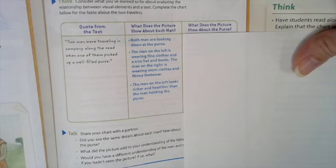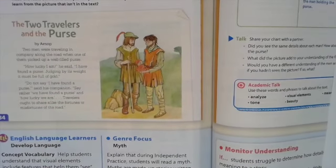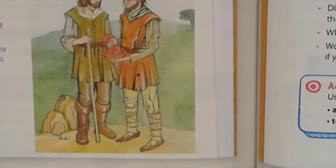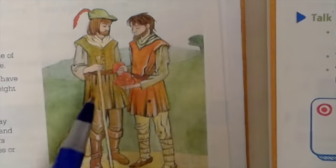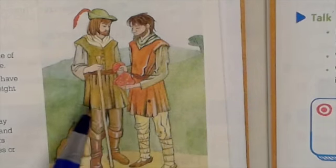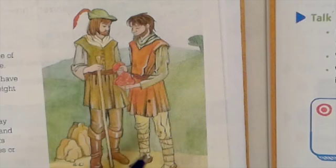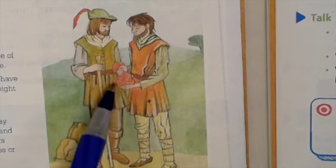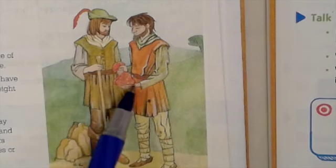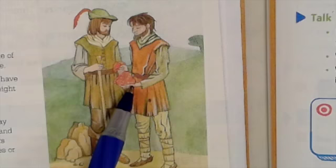What does the picture show us about the purse? Let's go back and look at it. If we zoom in on this purse, it looks like a nice purse — it's very decorated, with gold designs on it, and it looks pretty full. He's holding it with two hands, one hand at the top and another underneath, so it looks like it's probably filled with a bunch of money.